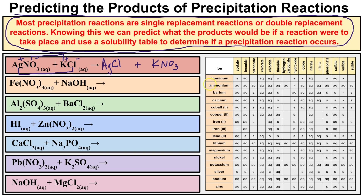We can look at our solubility table: go to potassium, scroll over to nitrate — it's aqueous, it dissolves in water. However, if we look at silver and go over to chloride, we see that silver chloride will not dissolve in water. So when you mix these two solutions together, a chemical reaction does take place because a precipitate forms — and that precipitate is your silver chloride.